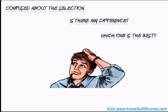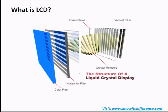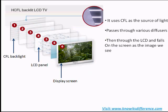LCD TVs and LED TVs are technically both LCD TVs, and the screen on both TVs is a liquid crystal display. This allows the TV to be flat and thin compared to traditional CRT screens. An LCD display has two layers of glass which are polarized and joined together. The liquid crystals then pass or block the light to display the television picture. The crystals do not produce any light — the light comes from a series of lamps at the back of the screen.